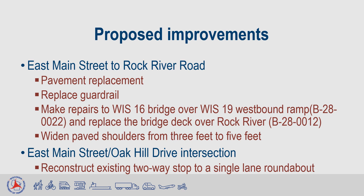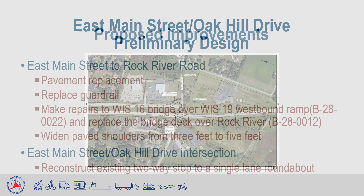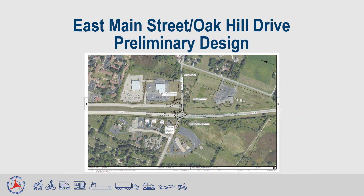The reconstruction project will reconstruct the existing intersection of East Main Street, Oak Hill Road, and Wisconsin 16 to a single-lane roundabout. This slide depicts the preliminary design of the single-lane roundabout presented at the public involvement meeting in July of 2022. Based on public input, our design team reconfigured the roundabout to direct the east leg of the roundabout to the Frontage Road and relocate the intersection of the Frontage Road and Oak Hill Drive to the east leg of the roundabout, which you will see on the next slide.